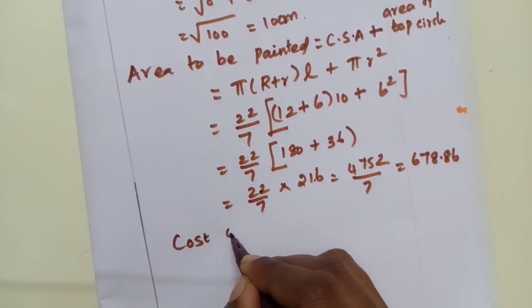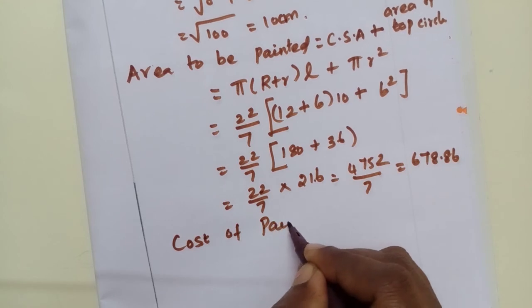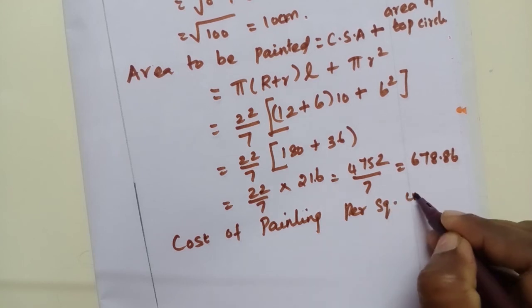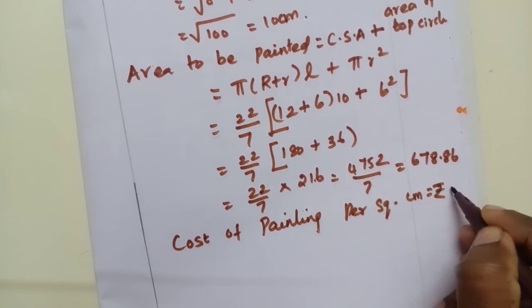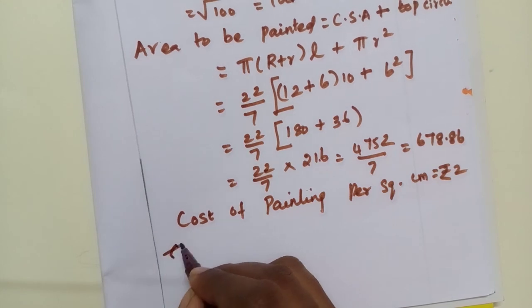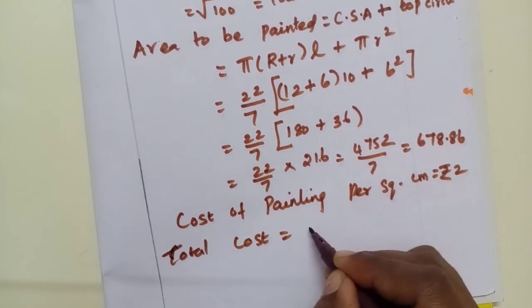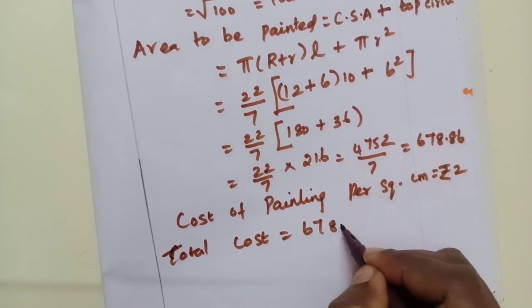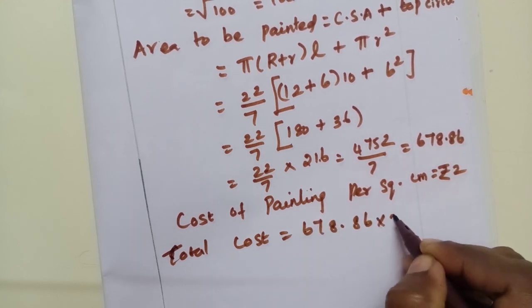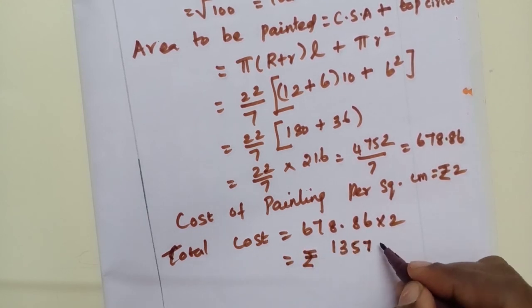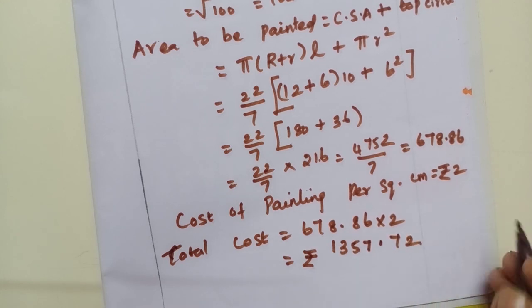Cost of painting per square centimeter is equal to rupees 2. So total cost equal to 678.86 into 2. If we multiply, we get 1357.72.